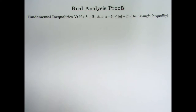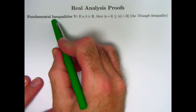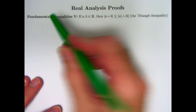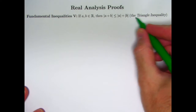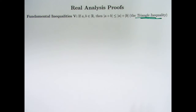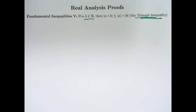Welcome to my seventh video on proofs in real analysis. It's also the fifth video on doing what are called fundamental inequalities. This one's kind of a biggie — it's even got a name. It's called the triangle inequality. For the real number system, it's not really clear why it's called the triangle inequality; you would only see why when you consider higher dimensions.